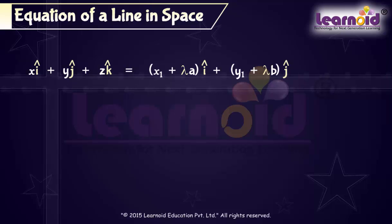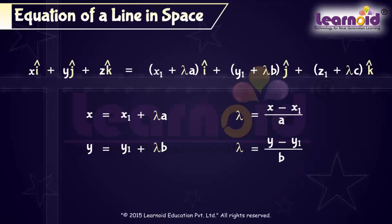On equating coefficients of unit vectors, we will get x equals x1 plus lambda a, y equals y1 plus lambda b, z equals z1 plus lambda c.